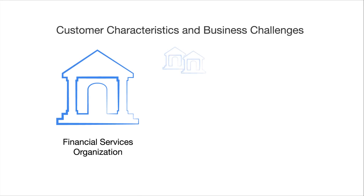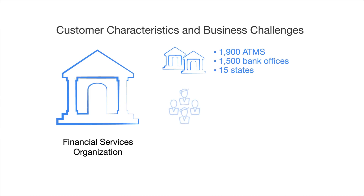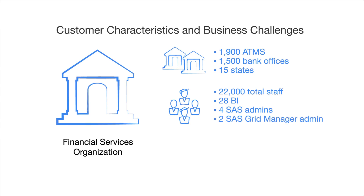The customer organization is a financial services organization with over 1,900 ATMs and 1,500 bank offices across 15 states. It has 22,000 total staff with 28 on the business intelligence team.